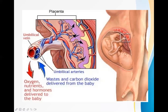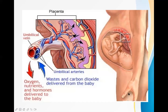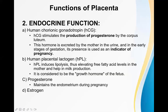The umbilical vein is the large rounded red structure, and the two umbilical arteries are the other vessels. Oxygen, nutrients, and hormones are delivered to the baby through the umbilical vein, while waste products and carbon dioxide are delivered from the baby to the placenta and then to the maternal circulation by the umbilical arteries. In the case of the umbilical cord and placenta, the vein carries oxygenated blood and the arteries carry deoxygenated blood.